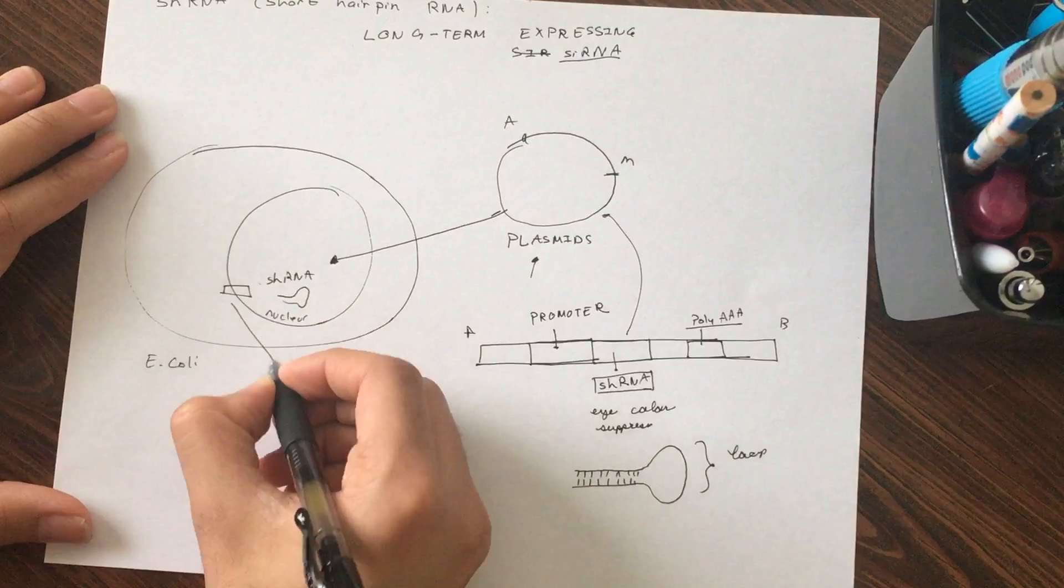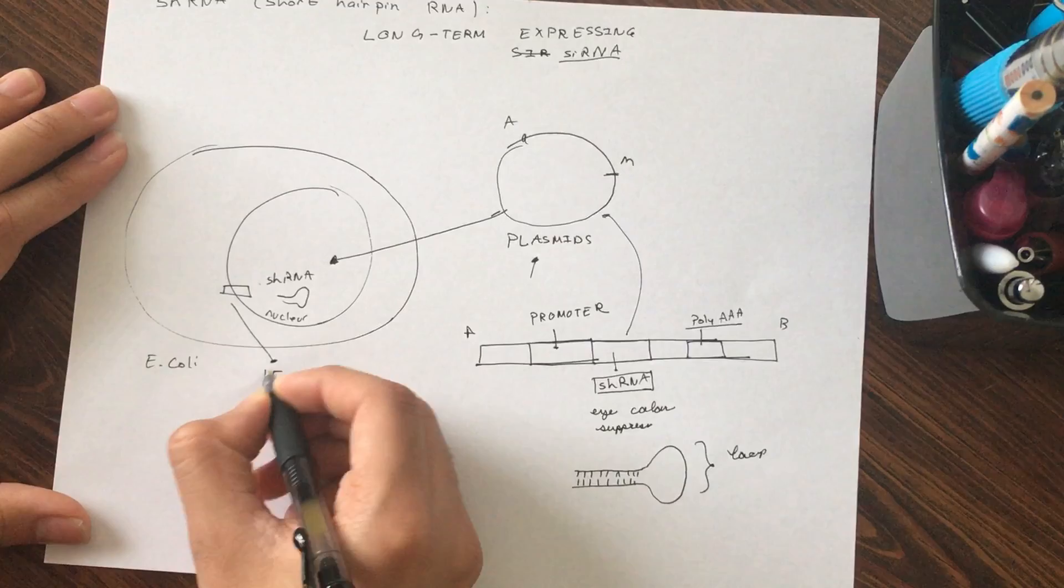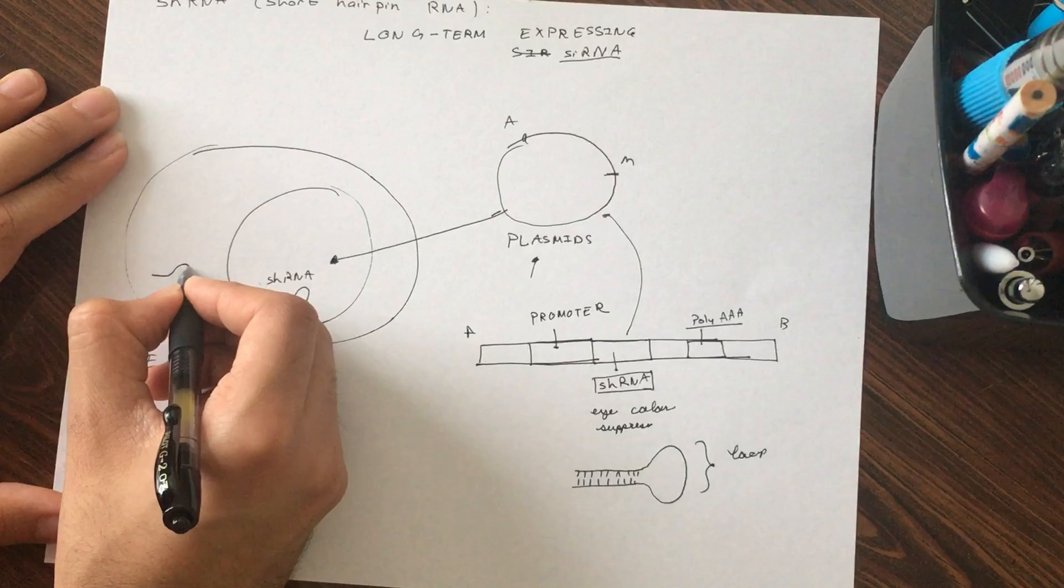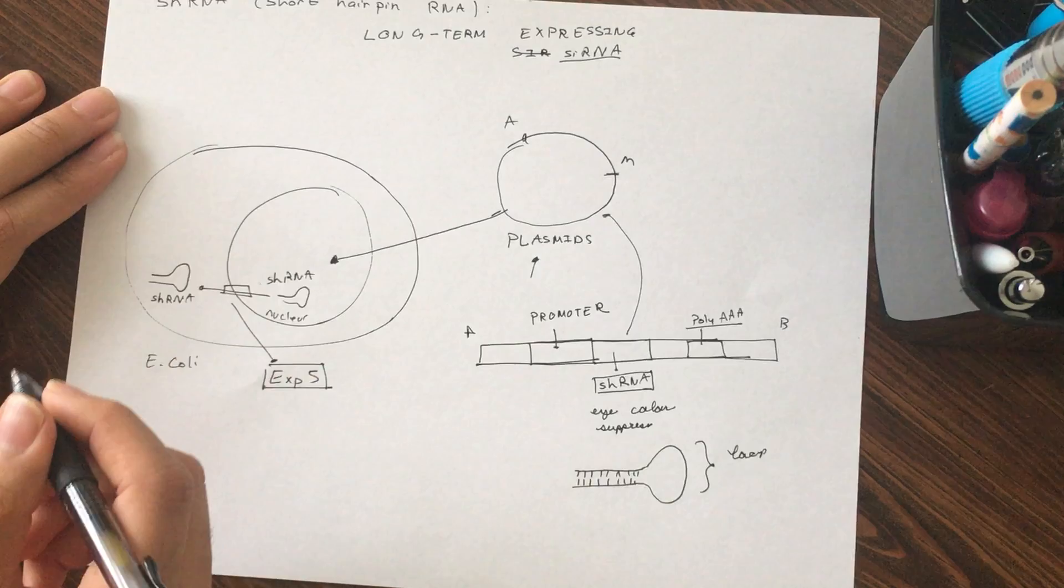This exporter is just called exp5. Once this crosses into the cytoplasm, shRNA...